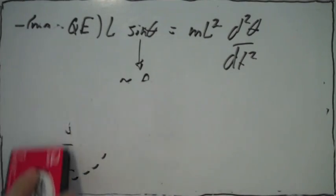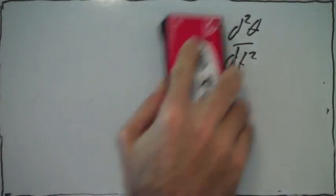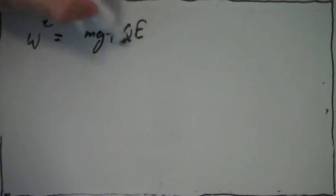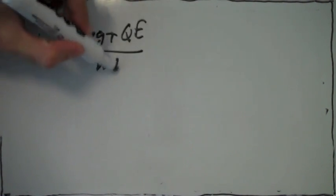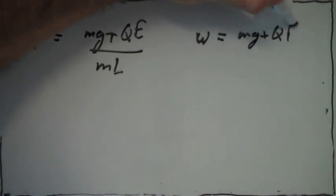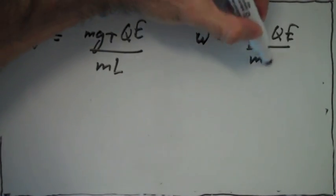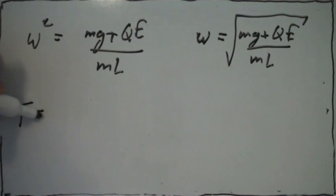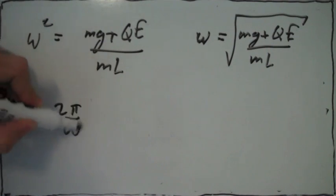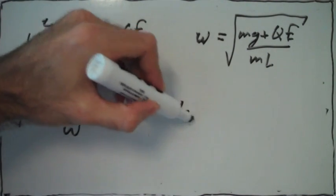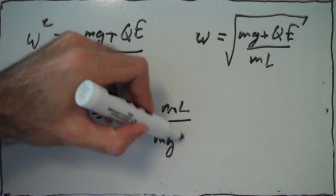So if we know what omega squared is, we can find the period of oscillation. Omega squared is given by this expression, and omega is just the square root of that. The period of oscillation is just 2π divided by omega. So we write T = 2π divided by what we have for omega.